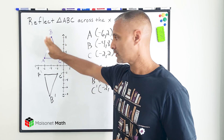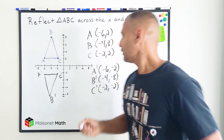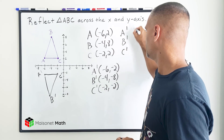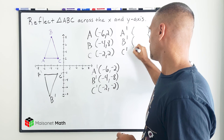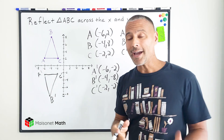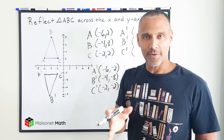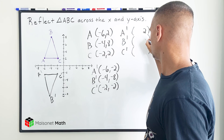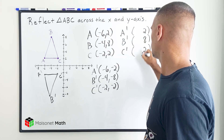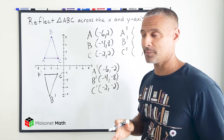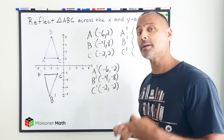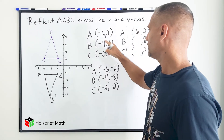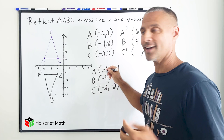Let's go ahead and reflect this triangle across the y-axis. When reflecting across the y-axis, all of the y values stay the same and the x values become opposite. So we're going to take 2, 8, and 2 and rewrite those as 2, 8, and 2 — keeping those positive, they remain the same. And all of these x values are going to become opposite of what they are. So we're going to take negative 6 and write positive 6, negative 4 is now 4, and negative 2 is now 2.